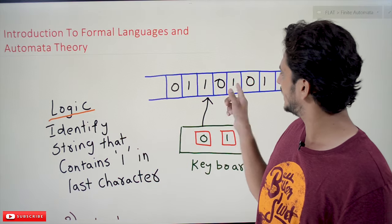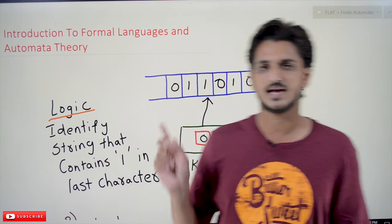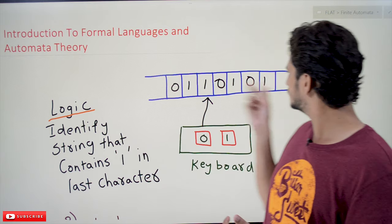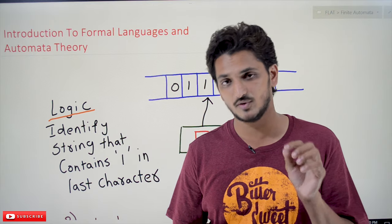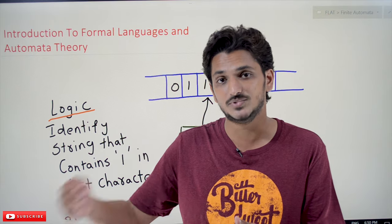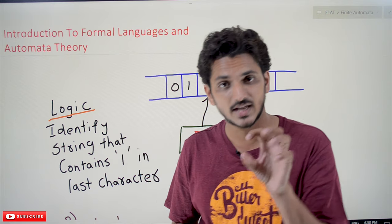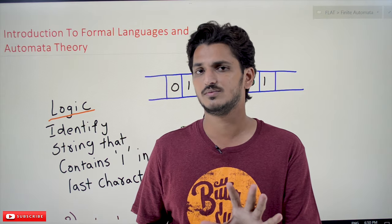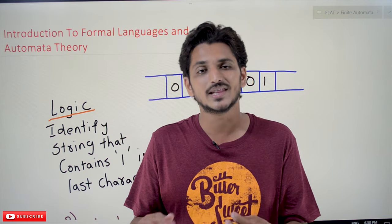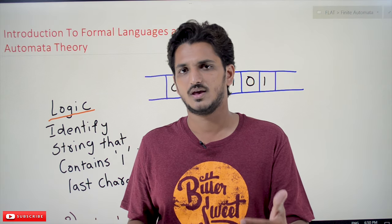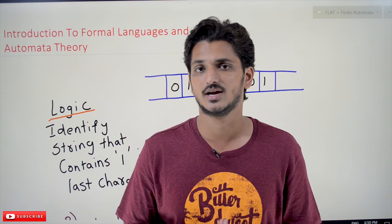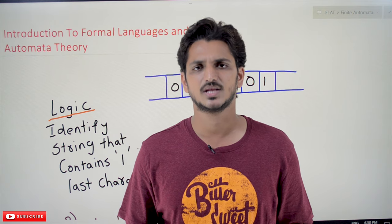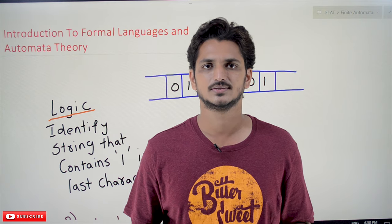In our next class we will discuss a simple first example — how to write the logic to identify whether a string ends with character '1', and we will design that machine, then go into the subject. The first 10 classes are very important, so please follow them as many times as possible. If you have any questions, post them in the comment section below. Thanks for watching — please subscribe to our channel and press the bell icon for the latest updates.